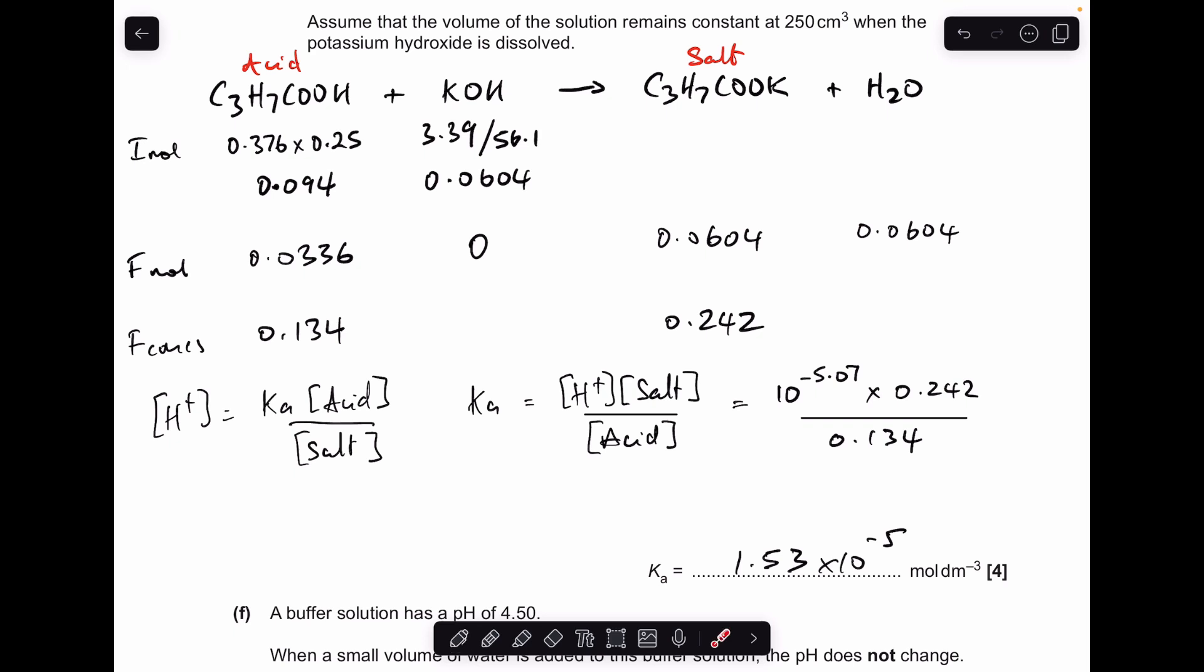Before I go on to part F just want to say something very quickly. Now technically we could have put the moles values into the Ka acid over salt expression and that's because the mole ratio is the same as the concentration ratio, and that's because they're both in the same volume. But technically it's the concentration that should go in, so that's why I did that.